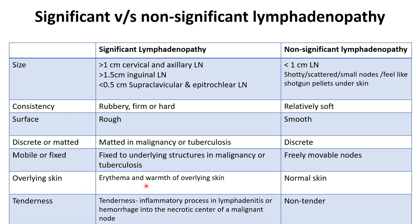Regarding overlying skin: erythema and warm skin will be seen whenever there is lymphadenitis — any infection or inflammation. Normal skin is present in non-significant. Regarding tenderness: non-significant lymphadenopathy is always non-tender. In significant lymphadenopathy, tenderness can be present because of inflammatory process in lymphadenitis, or sometimes hemorrhage into the necrotic center of the malignant node. In malignancy, non-tender lymph nodes are more common than tender. Tenderness in malignancy only occurs with hemorrhage into the necrotic center.